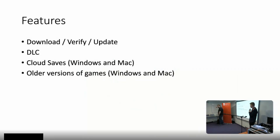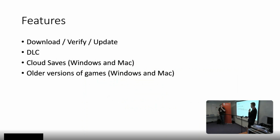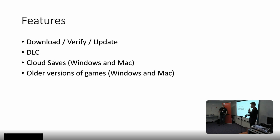For GOGDL, we currently support all the features you'd expect from a working client: downloading, verifying, updating, DLCs, and cloud saves. However, cloud saves only work on Windows and Mac because the API doesn't really support Linux native builds - we don't know where the files are stored and cannot sync them properly. We could build our own database for that, and that's in future plans. You can also download older versions of games, but again only Windows and Mac builds due to API limitations. We only have offline installers supported via GOG, and those are only the latest ones - we cannot roll back like on Windows and Mac.